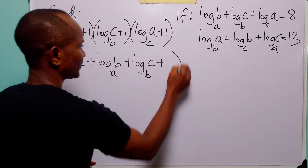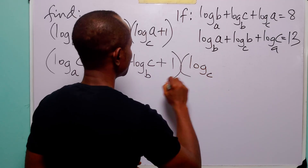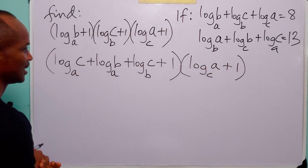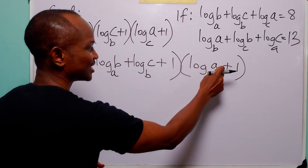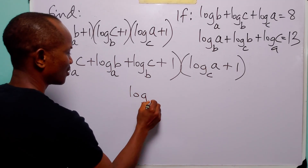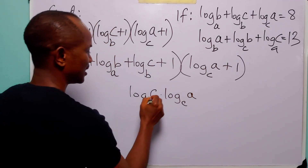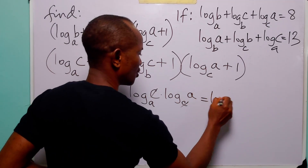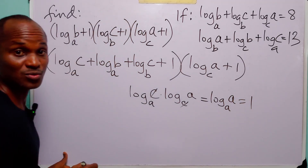We have log to base c of a plus 1. Here, log to base a of c multiplied by log to base c of a — by the chain rule the log to base c of a cancels, leaving log to base a of a, which we know equals 1.